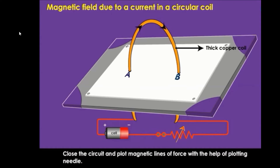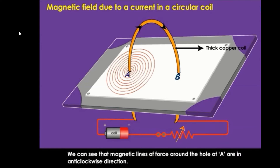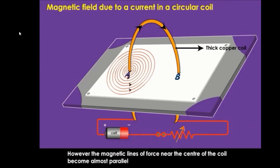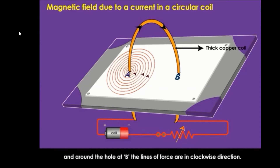Close the circuit and plot magnetic lines of force with the help of a plotting needle. We can see that the magnetic lines of force around hole A are in anti-clockwise direction. However, the magnetic lines of force near the center of the coil become almost parallel. And around the hole at B, the lines of force are in clockwise direction.